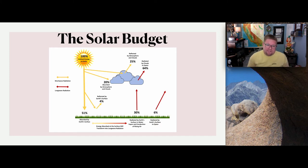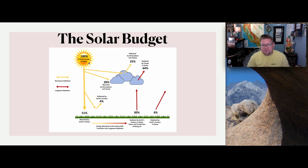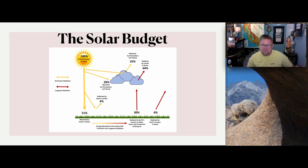The solar budget. Of the energy coming from the Sun to the Earth, we've measured it as 100%. Of that 100%, it is distributed a few different ways: 51% is absorbed by the Earth's surface; 4% is reflected off the Earth's surface; 20% is absorbed in clouds and the atmosphere; and 25% is completely reflected by the atmosphere and clouds back out into space. So a total of 29% is reflected back out into space, 20% is absorbed in the atmosphere and clouds, and 51% is absorbed at the surface.